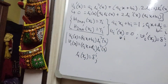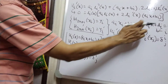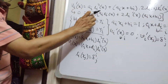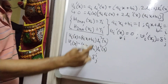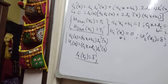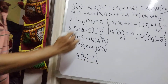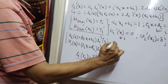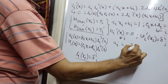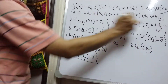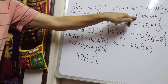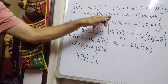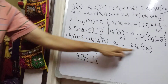Since u_i prime(x) = 0 for all i, putting x = x_i we have a_i·l_i(x_i) + 2·l_i prime(x_i)·(a_i·x_i + v_i) = 0. We know that l_i(x_i) = 1 and a_i·x_i + v_i = 1, so this simplifies to a_i + 2·l_i prime(x_i) = 0, giving us a_i = -2·l_i prime(x_i).